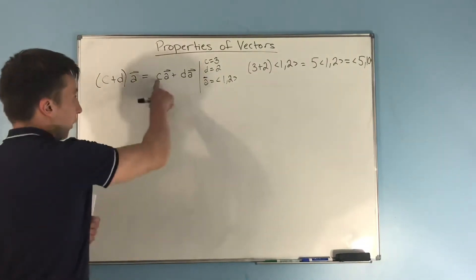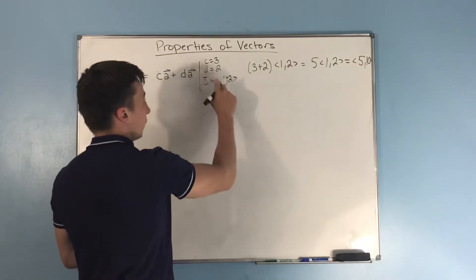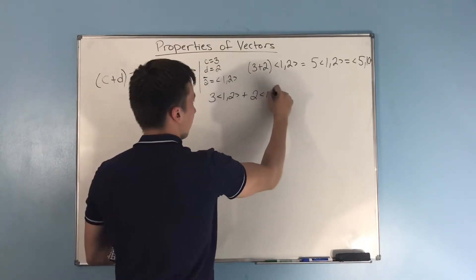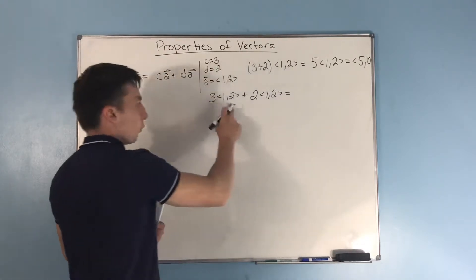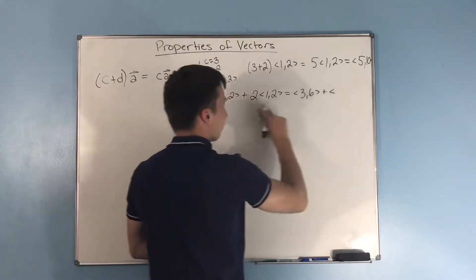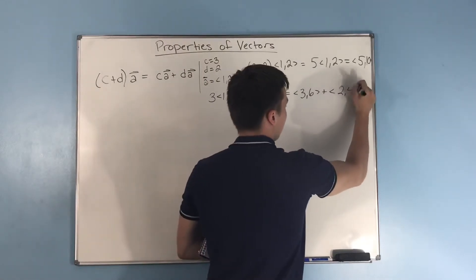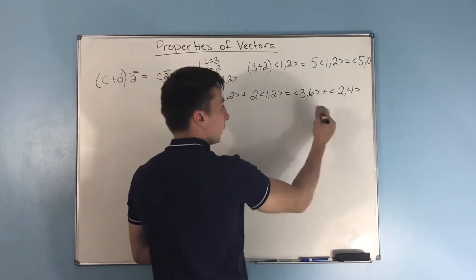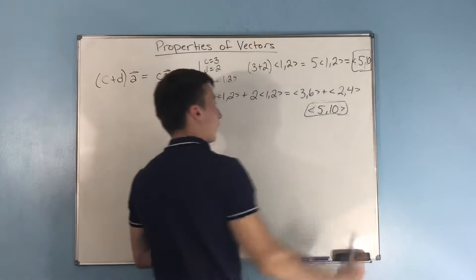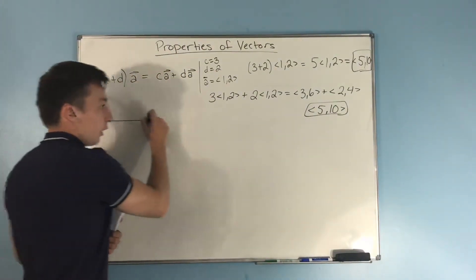But if we do on this side, we do it separately, where we have a 3 times a, which is 1,2, plus d, which is 2, 1,2. We have a 3 times 1,2, which is 3,6, plus 2 times this 1,2, which is 2,4. When we add these two together, we of course get 5,10, which gives us back to what we had on the left side of the equation. So it shows you that you can multiply a vector through to two scalars.